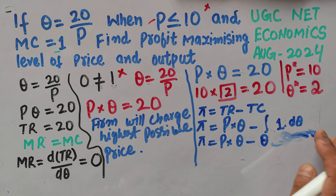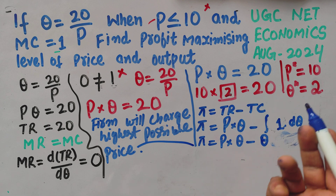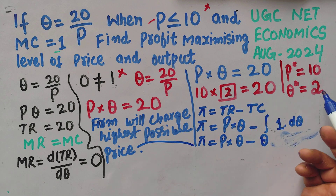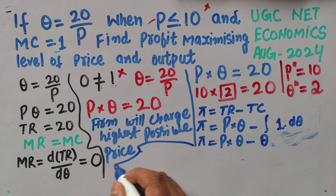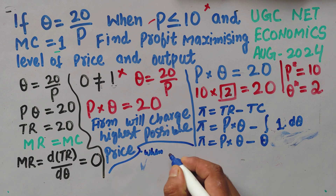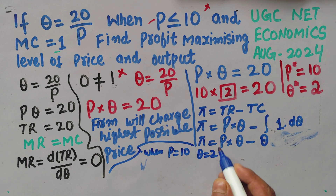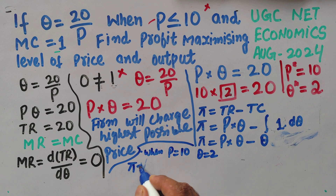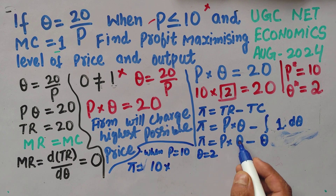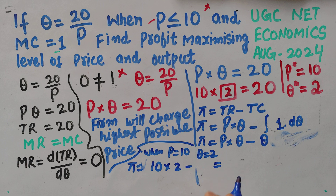Taking price = 10 and output = 2, profit = (10 × 2) − 2 = 20 − 2 = 18.